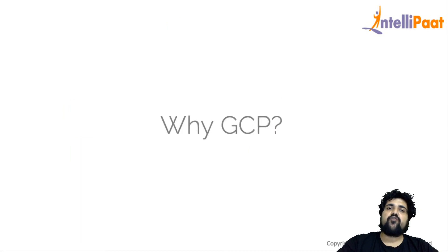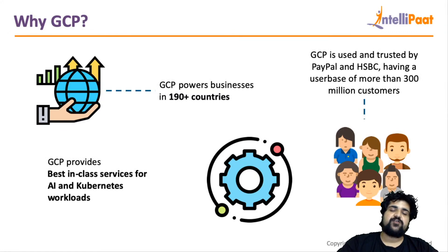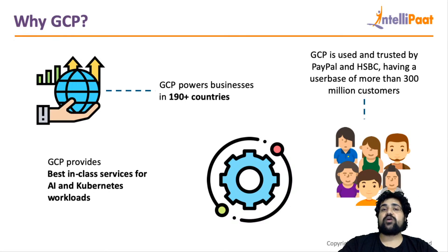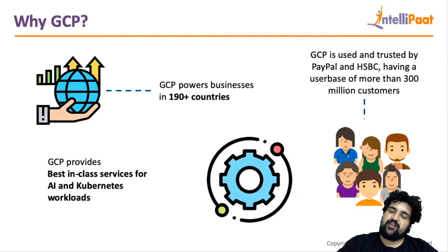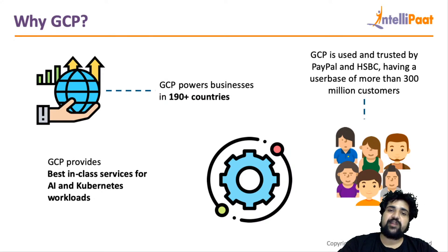Let's start with why you should go ahead and learn GCP. GCP is powering businesses spread across 190+ countries, so no matter which country you go to, you will always find a Google Cloud Platform job. GCP is also known for its AI, Kubernetes, and big data workloads. Any company working on AI, microservices, or big data that prefers cloud infrastructure will be using GCP, given that it provides more mature services in those areas than its counterparts AWS and Azure.